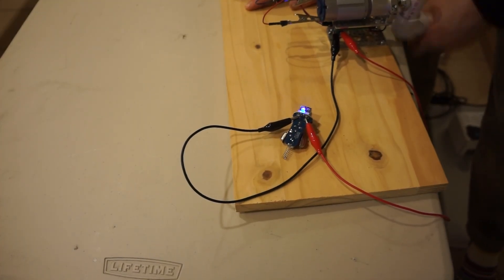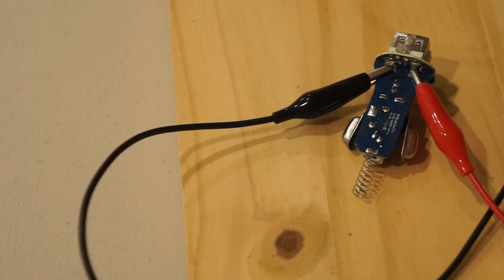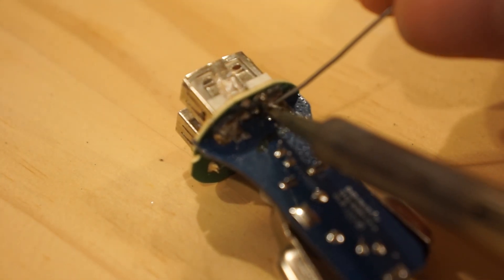The indicator light switches on, telling us that the circuit is connected properly. Let's just replace those alligator clips with some more permanent leads.